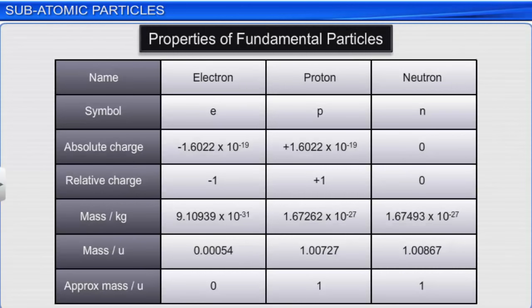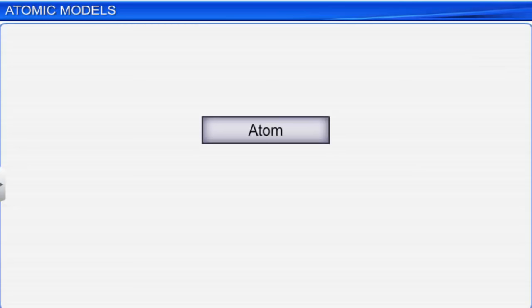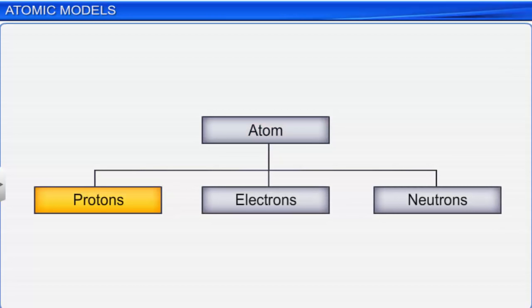The table here summarizes the properties of these fundamental particles. Through various experiments, it was established that an atom consists of subatomic particles such as protons, electrons, and neutrons. Now, let us look at the arrangement of these subatomic particles in an atom.